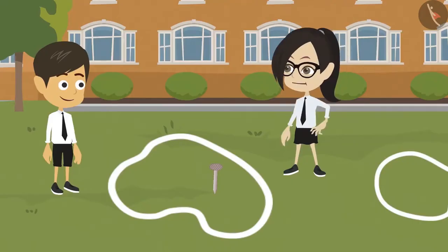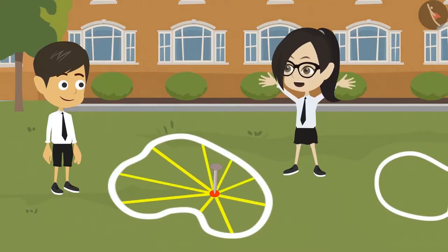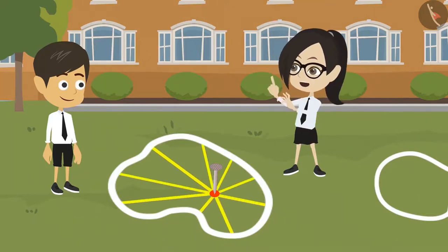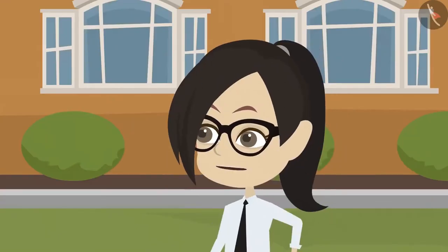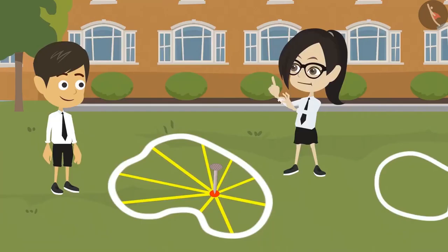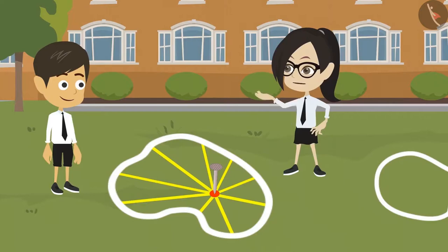Look. In this circle we will make different lines from the centre to the boundary. See all radii are of different lengths whereas they should be the same length. A circle cannot have radii of different lengths. While drawing a circle the radius should be kept the same.